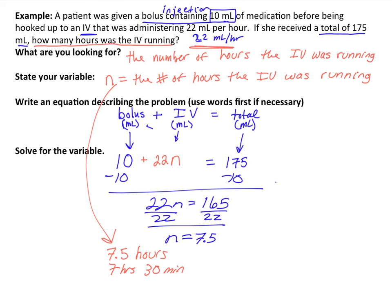10 milliliters was the bolus. 175 was the total. 22 milliliters for every hour. Every hour, that's how many I was looking for. What are those number of hours? Once I had that equation, I can solve. Now, not every single problem is going to be able to be solved using these types of questions and this type of technique. But it gives you an idea of what you should be asking yourself as you are completing these problems.